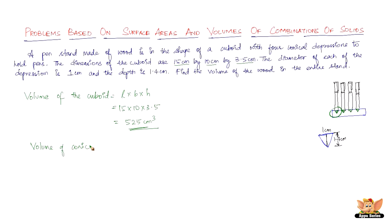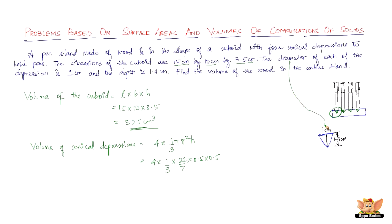Volume of the four conical depressions: there are four such cones, so it will be 4 × (1/3) × π × r² × h. That gives us 4 × (1/3) × (22/7) × 0.5 × 0.5 × 1.4. Note the diameter is 1 cm, so the radius is 0.5 cm. Solving this, we get approximately 1.47 cm³. So the volume of all four conical depressions is 1.47 cm³.